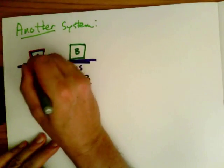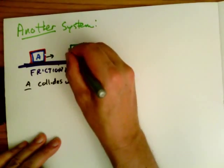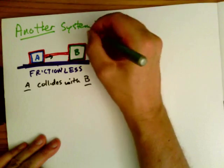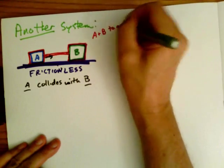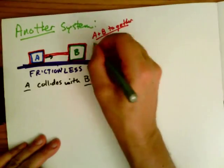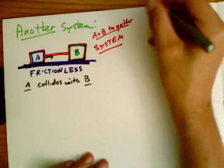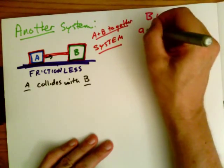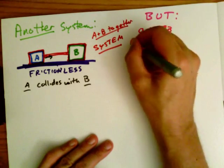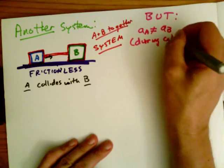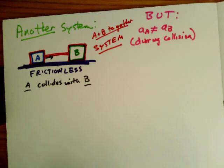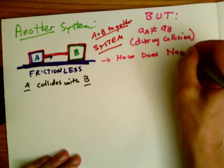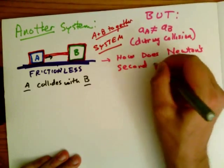How can we contend with this? Well again we have two bodies so we can create a system. Body A and body B together. Now connect them together with an imaginary line. Together they are considered a system. A and B together are a system. So the problem here is that A and B do not accelerate together. The acceleration of A is not the same as the acceleration of B, especially during the collision.